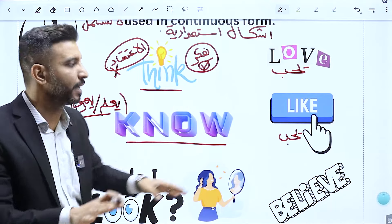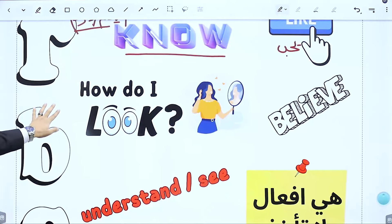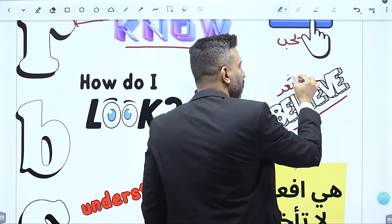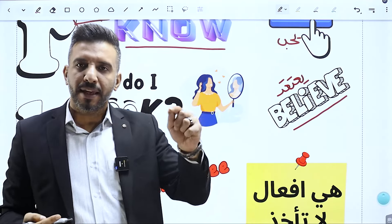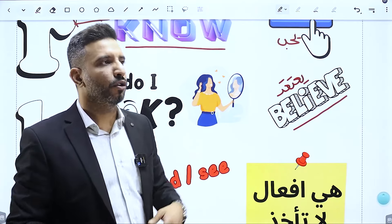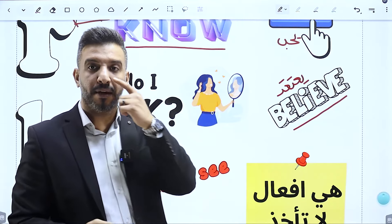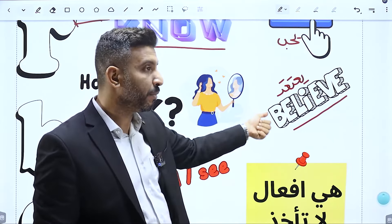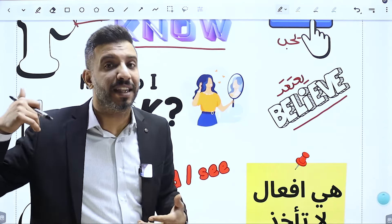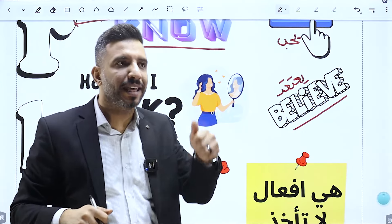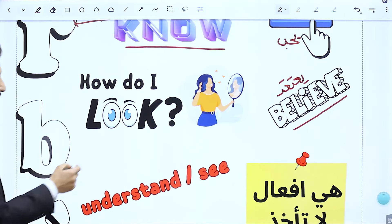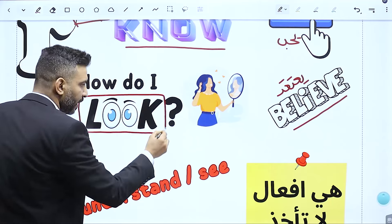الفعل 'believe' برضو بمعنى يعتقد مثل 'think'. الاثنين يحملوا معنى الاعتقاد، ممكن أقول 'I believe إنه أحمد كذا' أو 'I think إنه المسألة كذا'. 'believe' بمعنى الاعتقاد لا تأخذ ING. الفعل 'look': قد تأتي بمعنى ينظر أو يشاهد فتقبل الاستمرارية، ممكن أقول 'I am looking at a beautiful scene'.